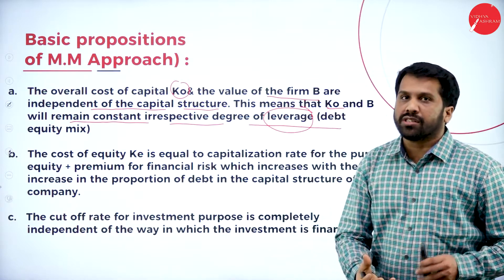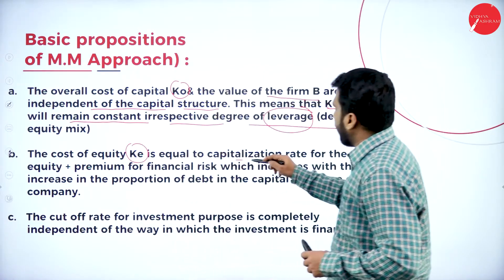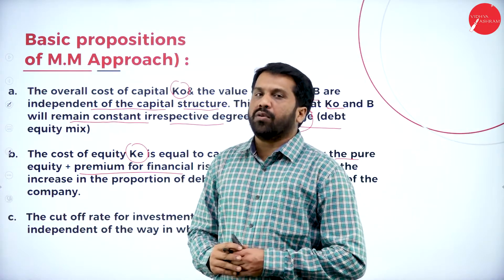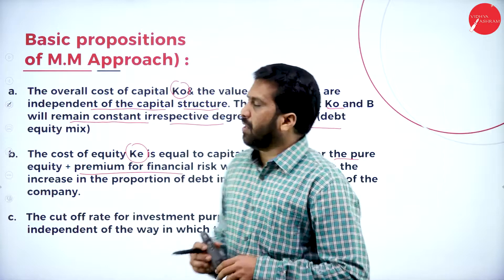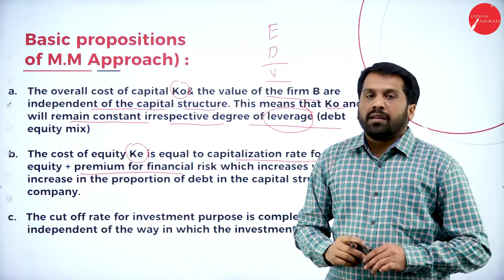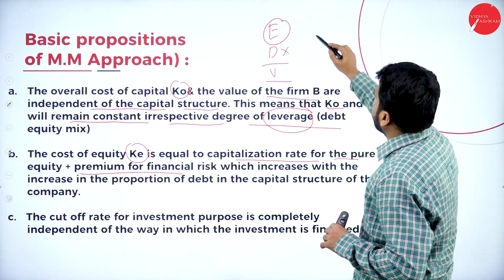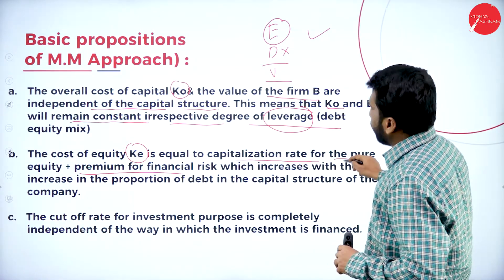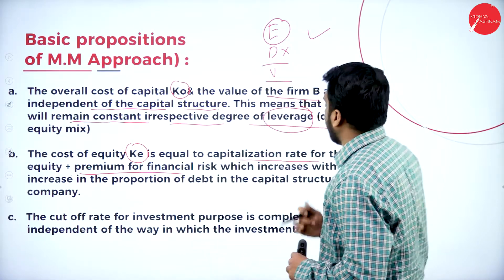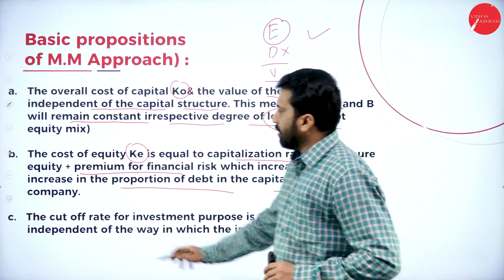Leverage means debt — debentures or loans. The cost of equity KE equals the capitalization rate for a pure equity firm plus a premium for financial risk. A pure equity firm has no leverage — it has only equity and no debentures. The cost of equity KE increases with the increase in the proportion of debt in the capital structure of the company.